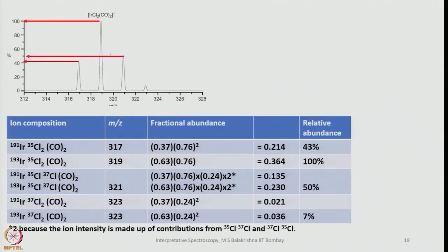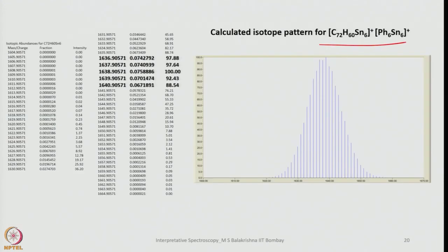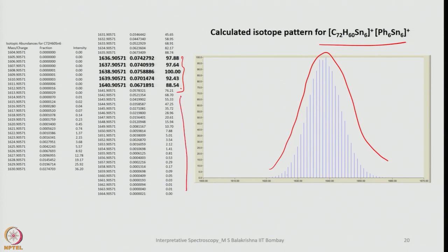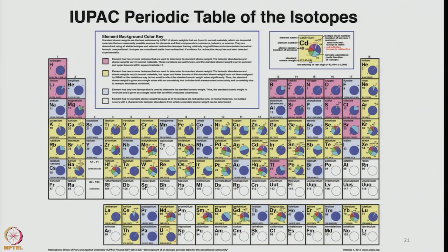The calculated peaks are reflected in the observed spectrum — around 43%, 50%, and 100% — confirming how one can calculate and interpret molecular ion or fragment peaks when multiple isotopes are present. This is a very beautiful mass spectrum of a hexaphenyl tin compound — a cationic compound — with major peaks identified, simulated using software and data collected for all observed peaks. A very useful periodic table is also shown, listing all isotopes and their abundances.